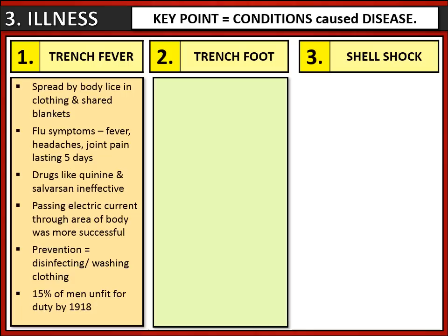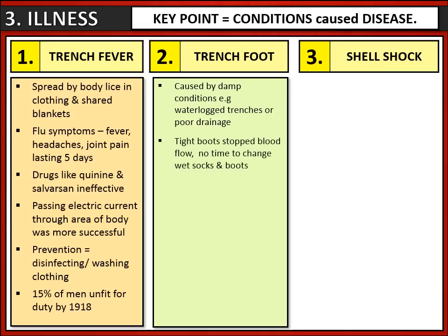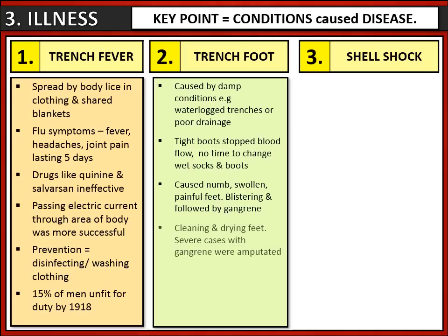Another illness that the army faced was trench foot. This was caused by the damp, wet trench conditions. Many trenches would become waterlogged and so soldiers' boots and socks were constantly wet or damp. This caused numb, swollen, painful feet — it would even cause blistering and in some cases gangrene, which is a particularly nasty form of infection. Most treatments just involved cleaning and drying the feet. With really bad cases of gangrene, soldiers had their toes and even their feet amputated. Prevention became very important and so the army encouraged soldiers to change their socks twice a day, and they would even do foot inspections to look at their soldiers' feet to make sure they were changing their socks regularly.